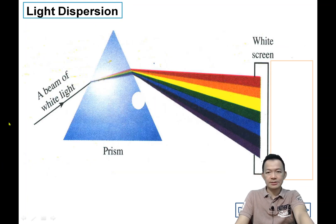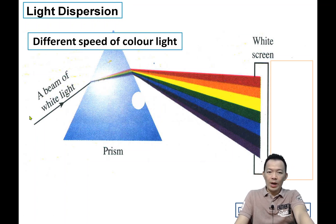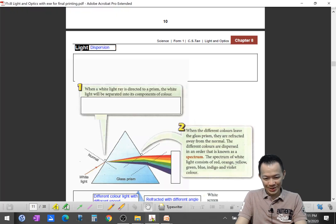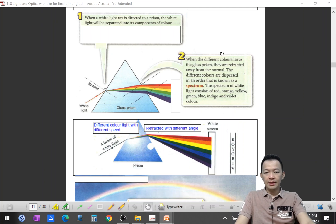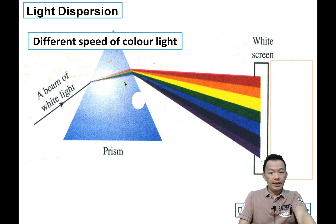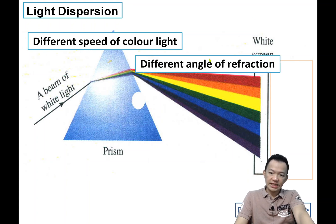When the white light passes through the prism with seven colors of light with different speeds, because of the different speed, they will be deflected with different angles. Finally, all the seven colors of light will be separated.